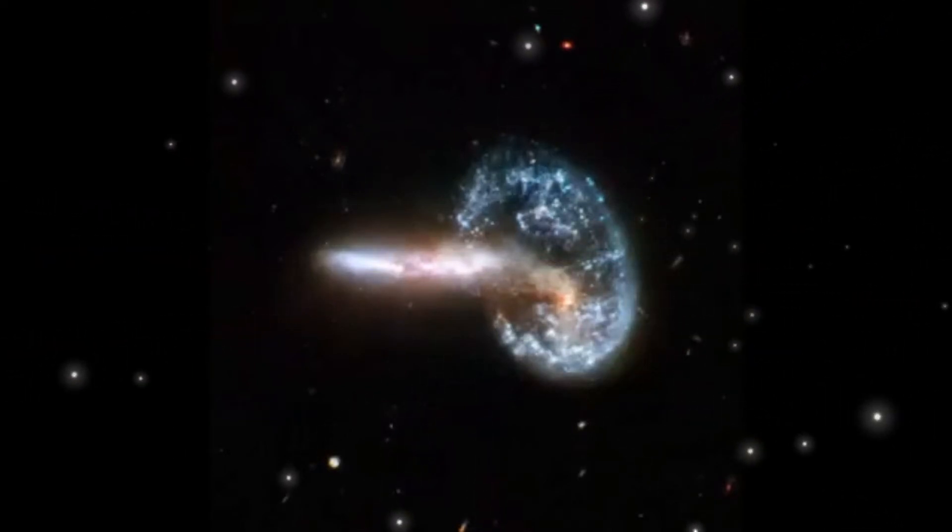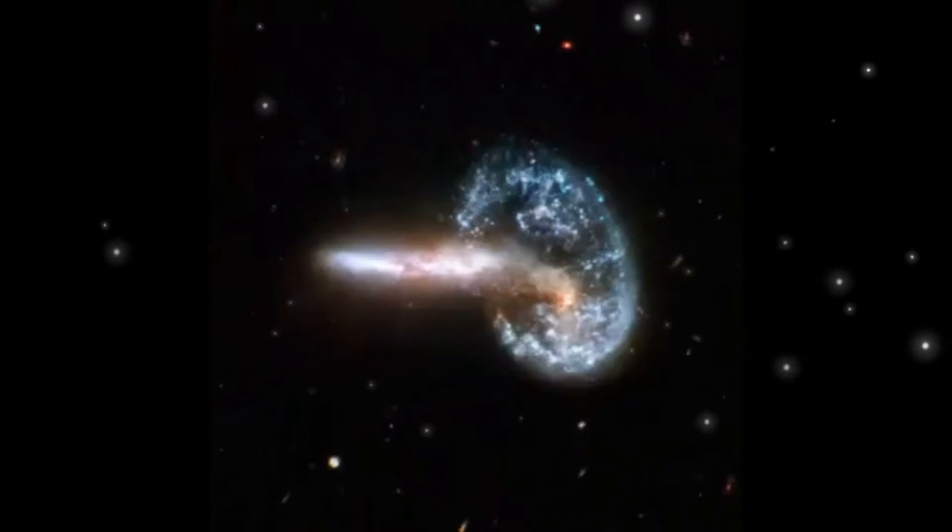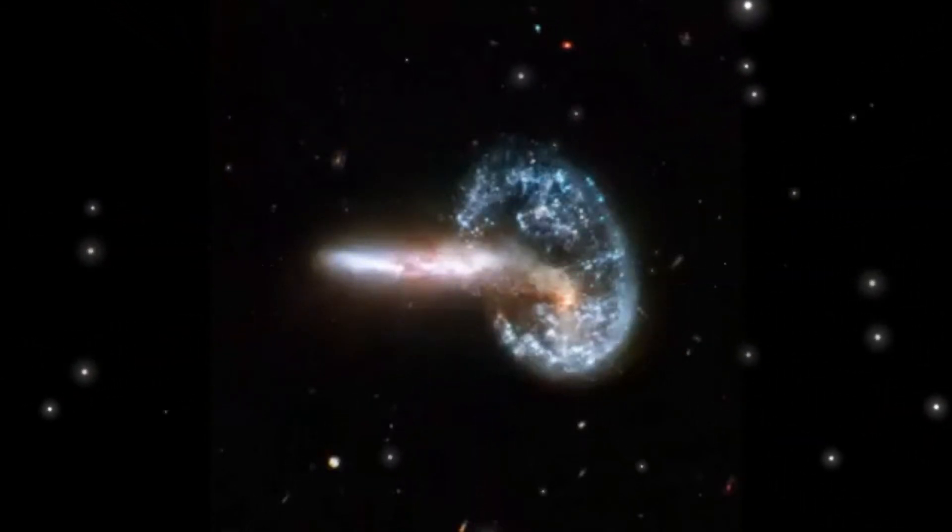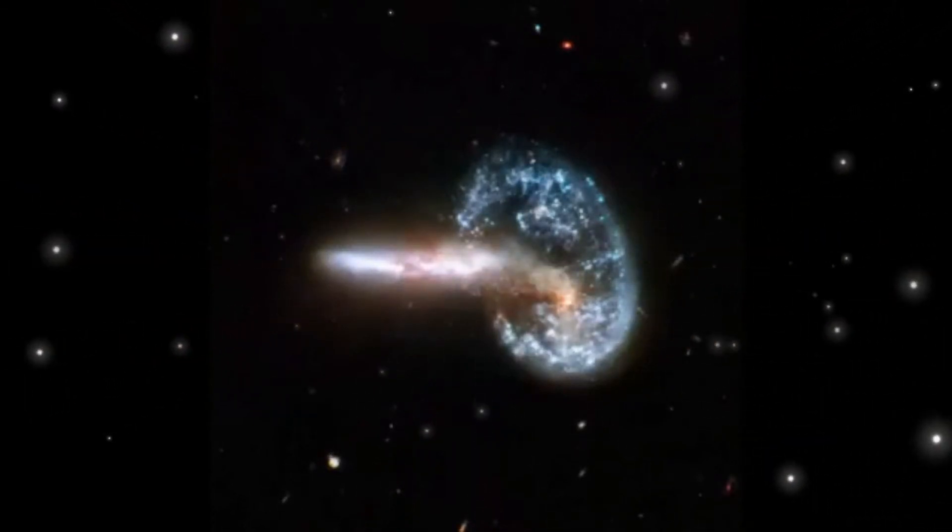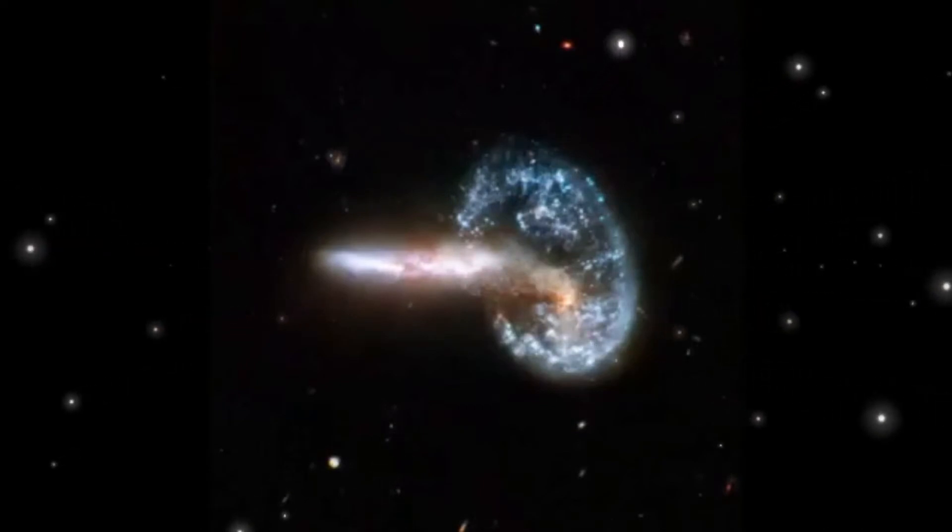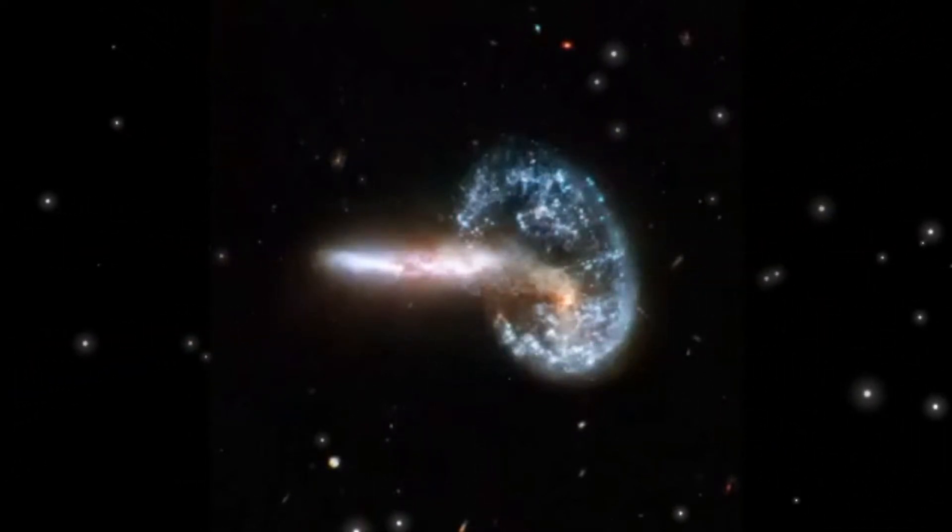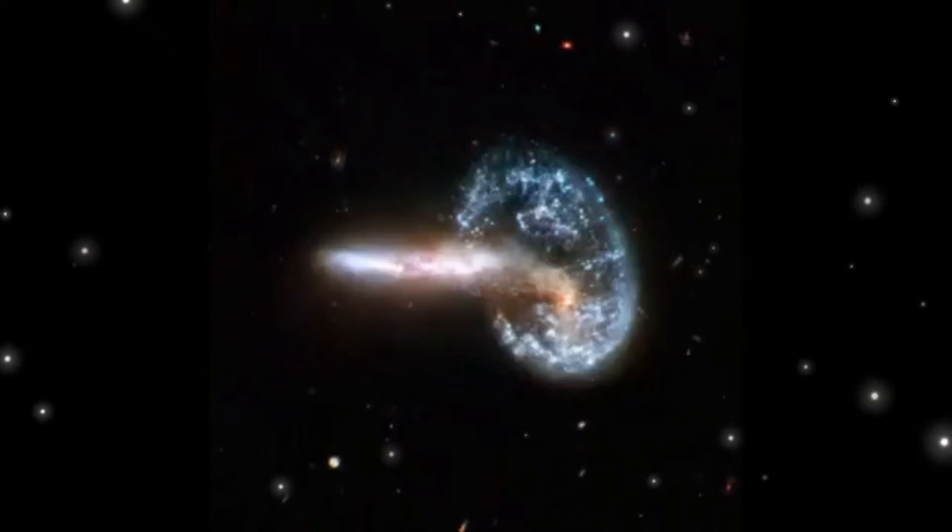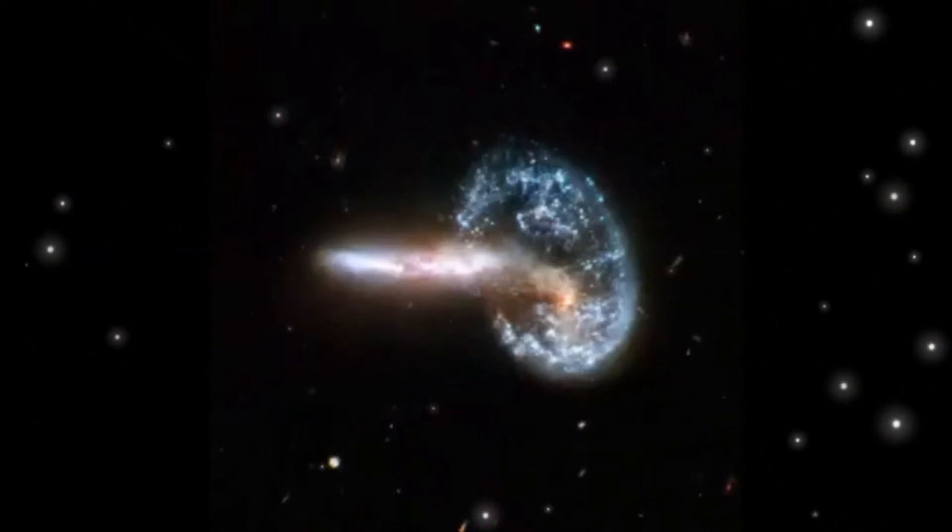Collisional rings are formed when a smaller galaxy crashes through the center of a large galaxy. Just as throwing a stone into a pond creates an outwardly moving circular wave, a gravitational density wave is generated at the point of impact, throwing matter out into a ring shape.